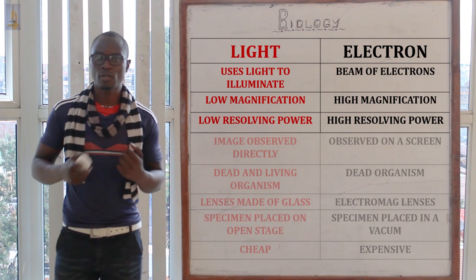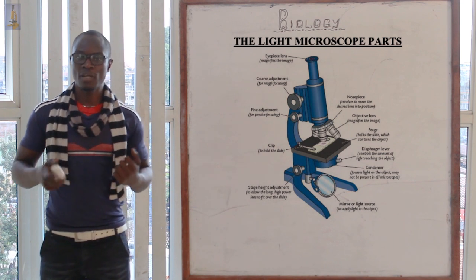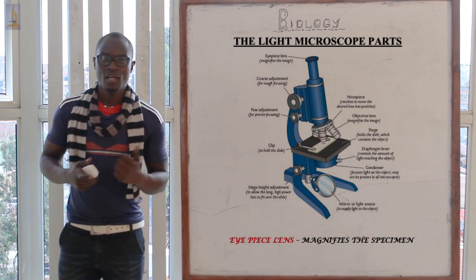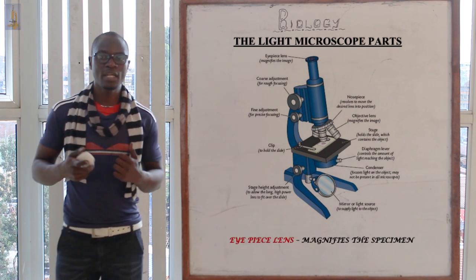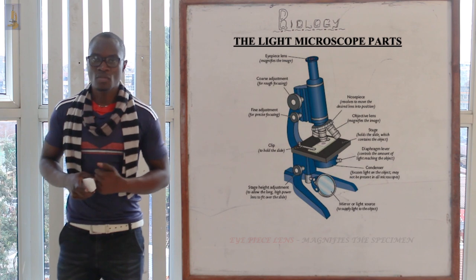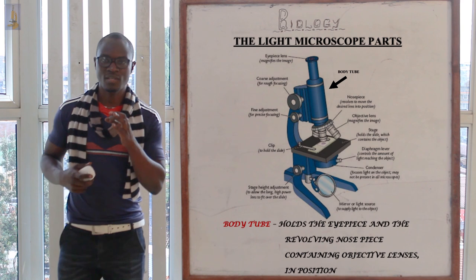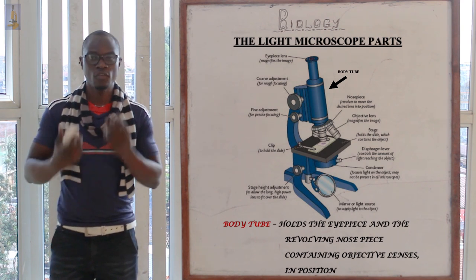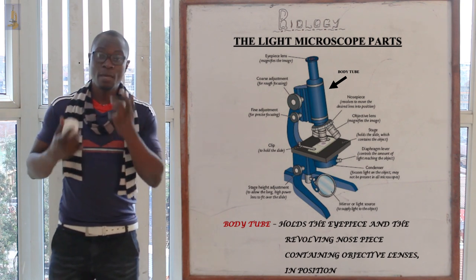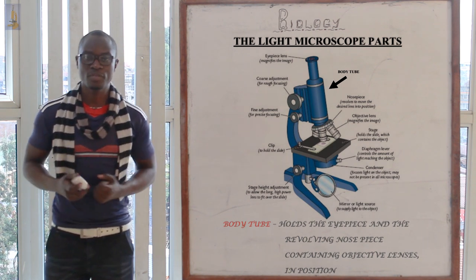Let's look at the parts of the light microscope. The eyepiece contributes to the magnification of the specimen. The body tube holds the eyepiece lens and the revolving nosepiece containing the objective lenses in position.